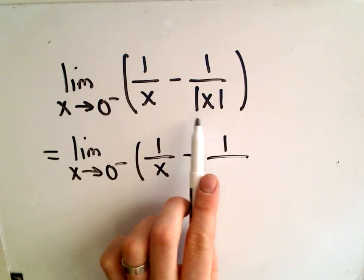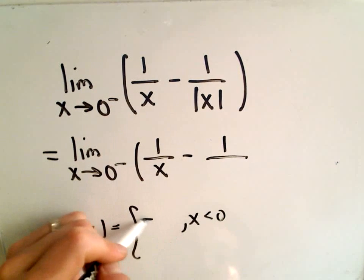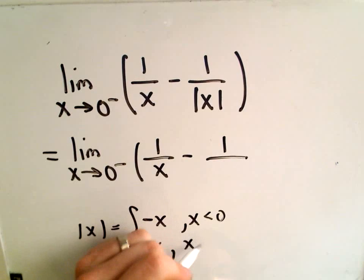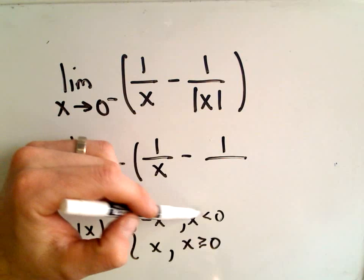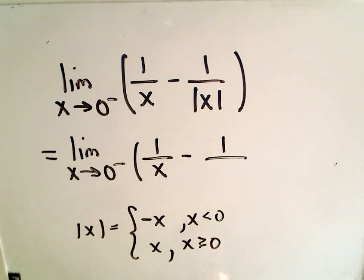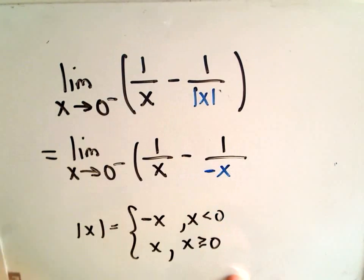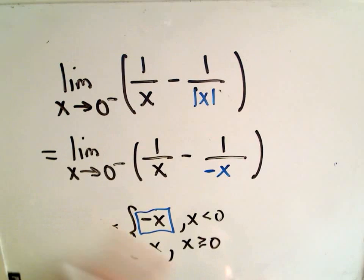Recall the definition of absolute value of x: if x is less than 0, we replace it with negative x. Since x is approaching 0 from the left, we're using x coordinates less than 0. So we replace this absolute value of x with negative x, based on the piecewise definition.